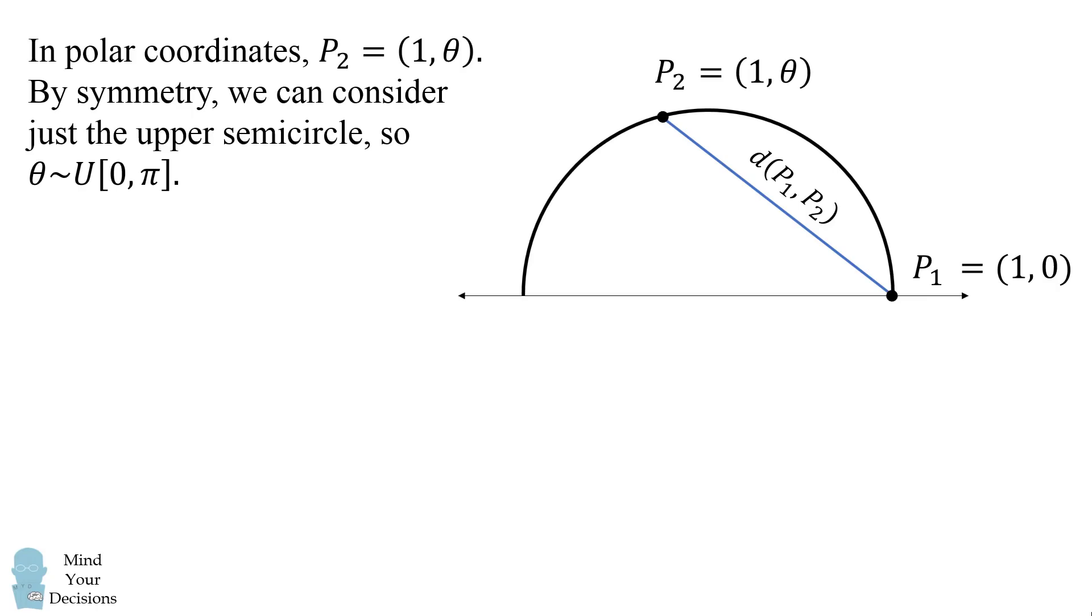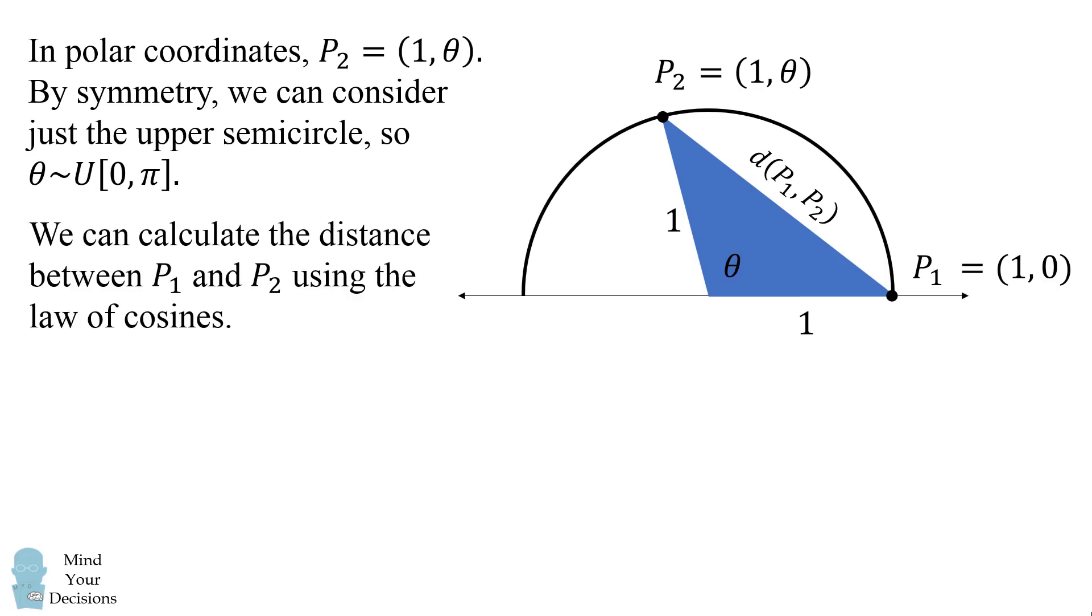So we want to calculate the distance between p1 and p2. How can we do that? Well, notice we have a triangle between p1, p2 and 0, 0. This side of the triangle is 1, this side of the triangle is also 1. And the angle between them is theta. We can calculate the distance between p1 and p2 using the law of cosines.